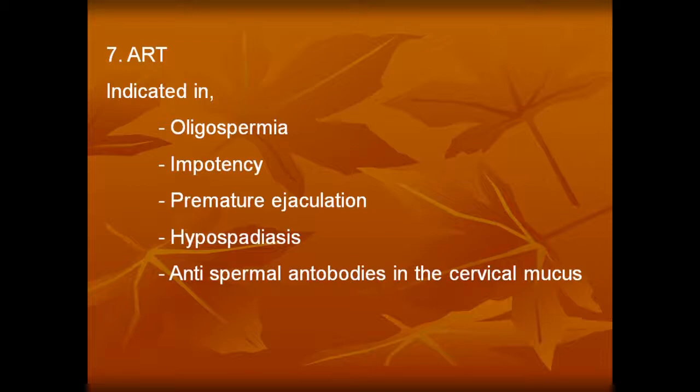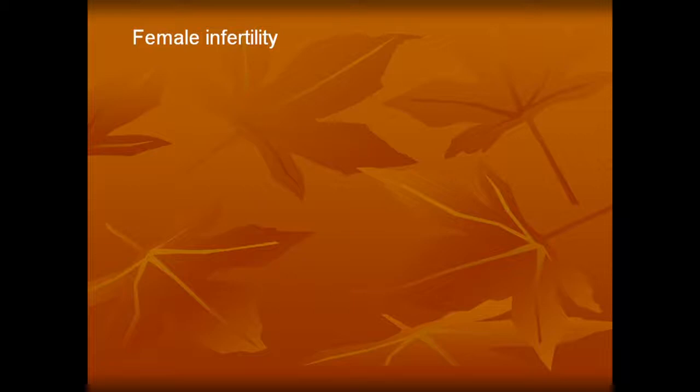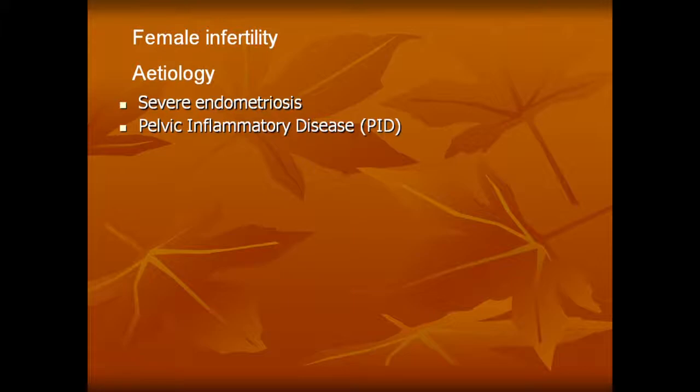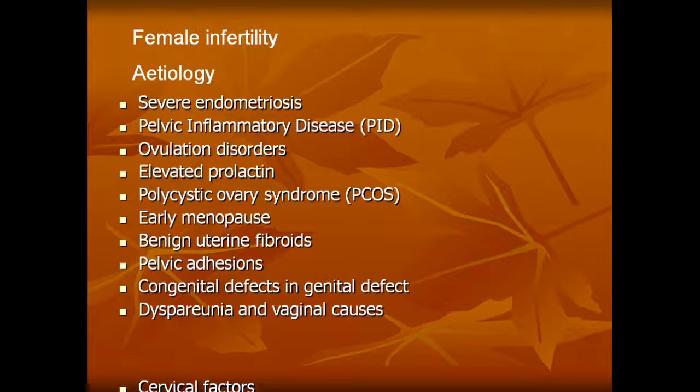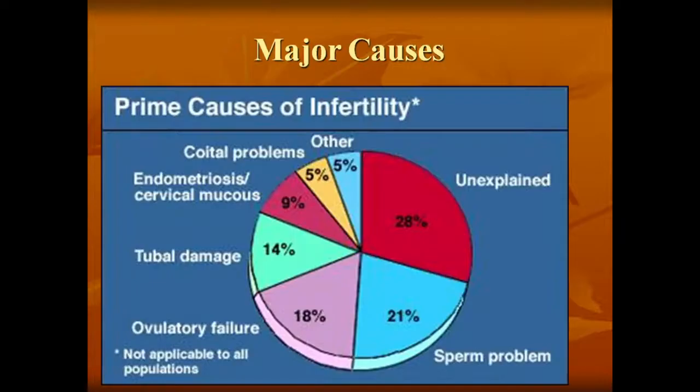Female infertility — the etiology includes severe endometriosis, pelvic inflammatory disease, ovulation disorders, elevated prolactin, polycystic ovarian syndrome, early menopause, benign uterine fibroid, pelvic adhesions, congenital defects in genital tract, dyspareunia, vaginal causes, cervical factors, and tubal factors.